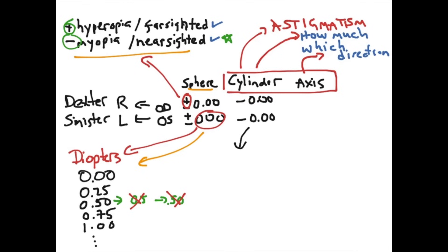Unlike the sphere value, the cylinder value is always going to be minus — this is referred to as a minus cyl prescription. Optometrists will always write their prescription in a minus cyl format. Ophthalmologists, however, will write it in a plus cyl format. If you ever see this value as a plus, it may be in plus cyl form, and it's really important to take note of that. Otherwise, this value should always be minus. The cylinder value is in diopters, in the same 0.25 steps as the sphere.